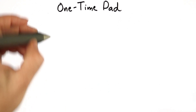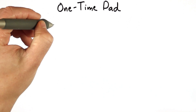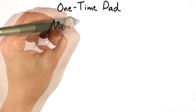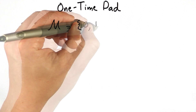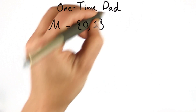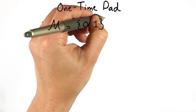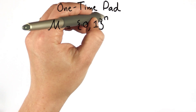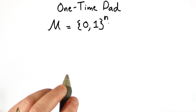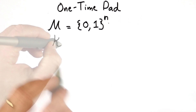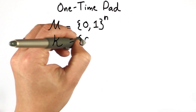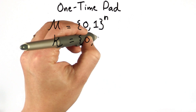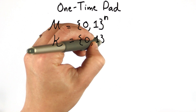Let's define that a little more precisely. Our set of messages is strings of 0's and 1's — we'll use bits — of some fixed length. n is a number that gives us the maximum length of a message. Our message is selected from all binary strings of length n, and our key is also selected from the set of all binary strings of length n.